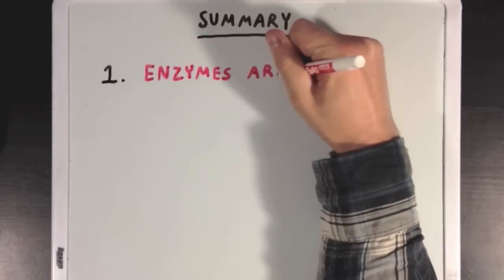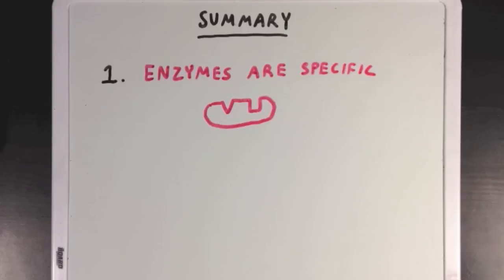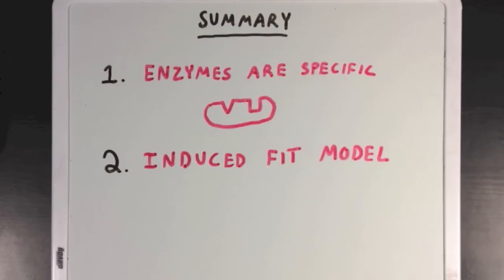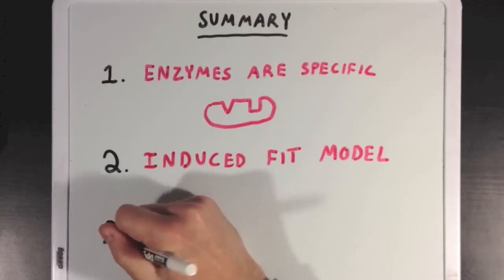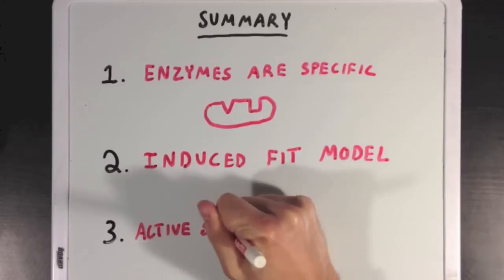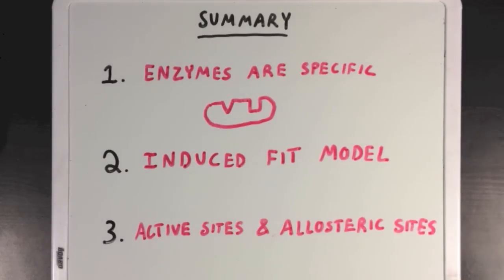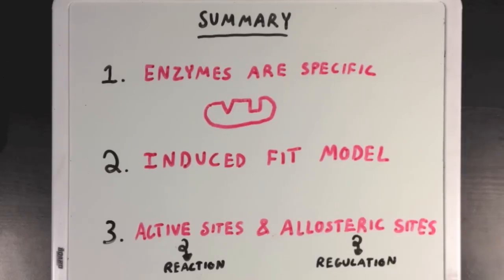So what did we learn? First, we learned that enzymes are specific — each can bind only specific substrates to catalyze specific reactions. Next, we learned about the induced fit model, and how enzymes bind their substrates most tightly in the middle of a reaction at the reaction's transition state. Finally, we learned that enzymes have both active sites and allosteric sites, with active sites being where the reaction takes place and allosteric sites being where regulation takes place.